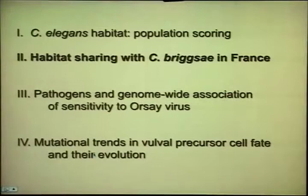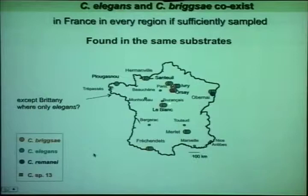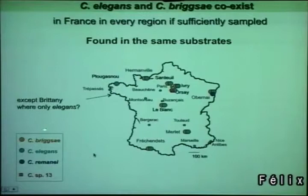The detailed studies I've been carrying out in France show that C. elegans and C. briggsae cohabit, which is pretty amazing. In all these samples I find exactly C. elegans and C. briggsae the same, and sometimes mixed in the same sample. This is a map of France where the colors represent the different species. Elegans and briggsae are everywhere. The exception is the west of France where I could only find elegans so far, the east where you start having C. remanei, and I found a new species in Orsay a couple of times.